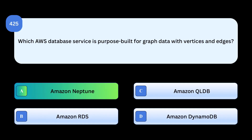Correct answer: Amazon Neptune. Amazon Neptune is a graph database designed for relationships using vertices and edges. Why others are incorrect: Amazon RDS is for relational databases, not graph. Amazon QLDB is a ledger database for immutable records. Amazon DynamoDB is a NoSQL key-value store, not graph-based.